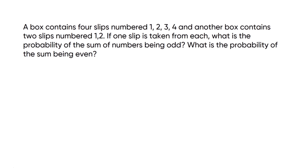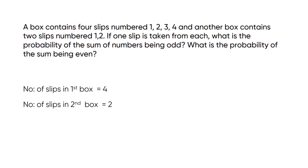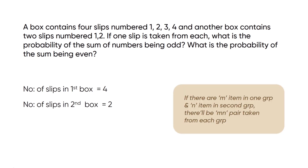In the first box there are 4 number slips, and in the second box there are 2 number slips. If there are m items in one group and n items in the second group, and one pair is taken from each group, then the total possible outcomes equal m times n, which is 4 times 2 equal to 8. So there are 8 possible outcomes.